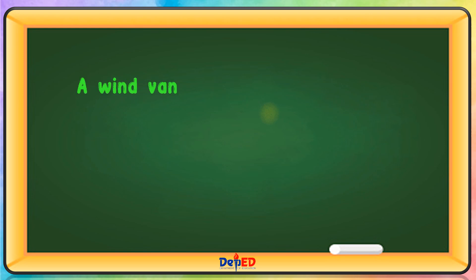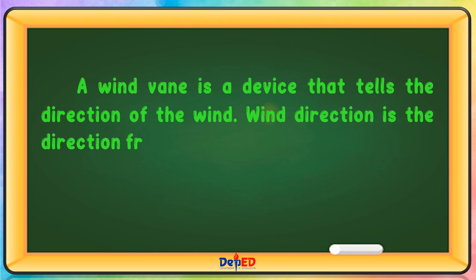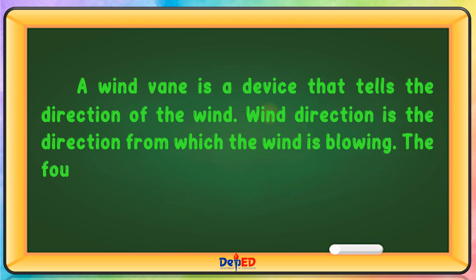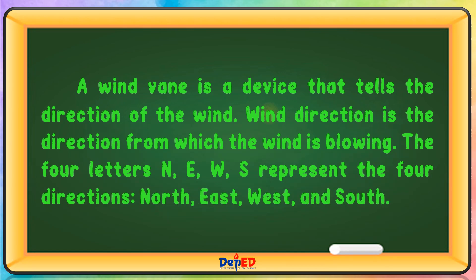A wind vane is a device that tells the direction of the wind. Wind direction is the direction from which the wind is blowing. The four letters represent the four directions: North, East, West, and South.